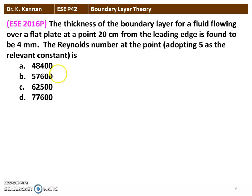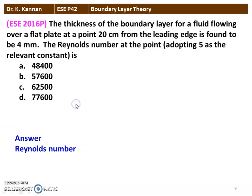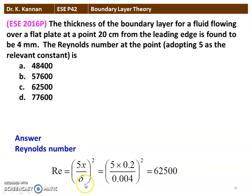Next question from the 2016 question paper: thickness of the boundary layer for a fluid flowing over a flat plate at a point 20 centimeters from the leading edge is found to be 4 millimeters. The Reynolds number at this point, adopting 5 as the relevant constant, is calculated from δ = 5x/√Re, giving Re = (5x/δ)² = (5 × 0.2 / 0.004)² = 250² = 62,500. The answer is 62,500.